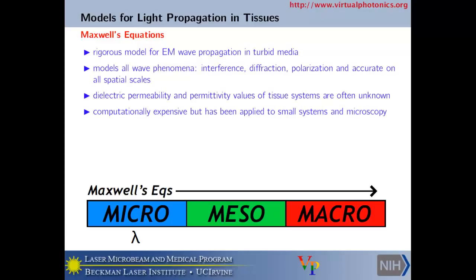The most rigorous model of dealing with electromagnetic wave interactions with any medium is Maxwell's equations. This models all wave phenomena — interference effects where two or multiple waves interact, diffraction whenever a wave hits an obstacle, and various orientations of this electromagnetic wave represented by polarization. The results of Maxwell's equations are accurate on all spatial scales. This is the gold standard way of dealing with the interaction of light with medium.